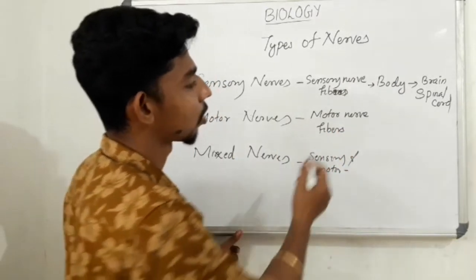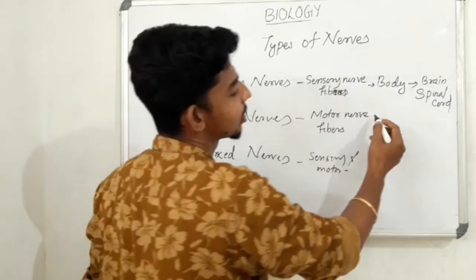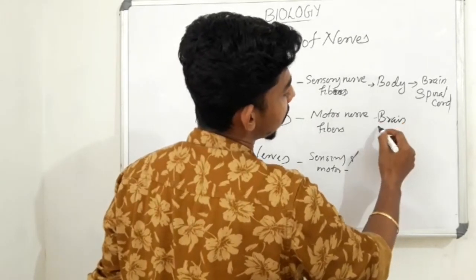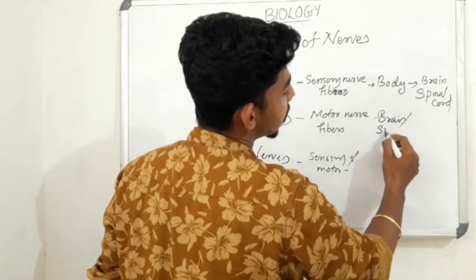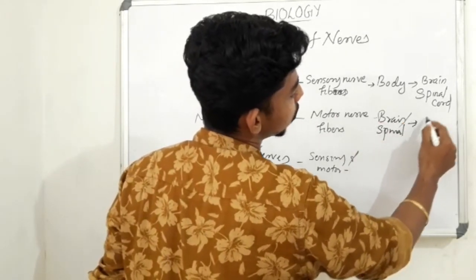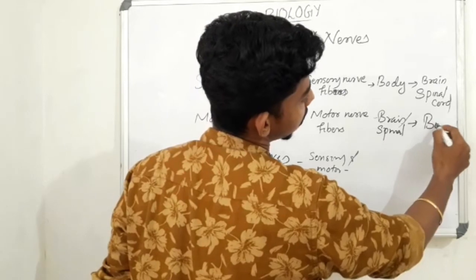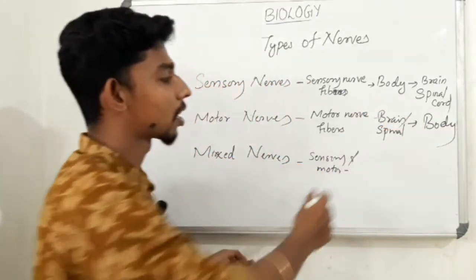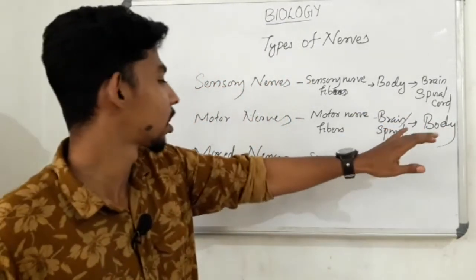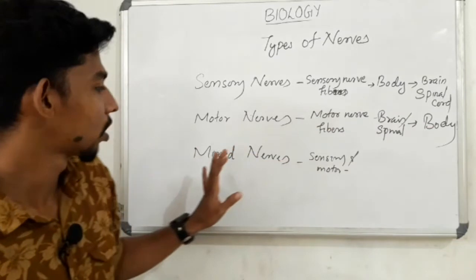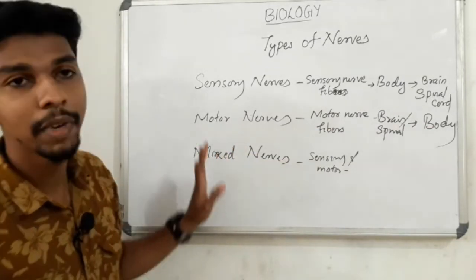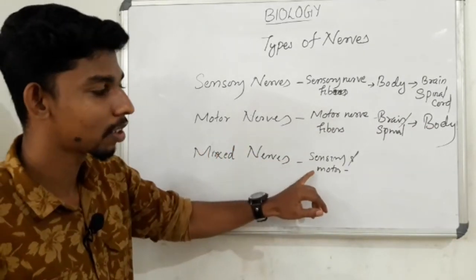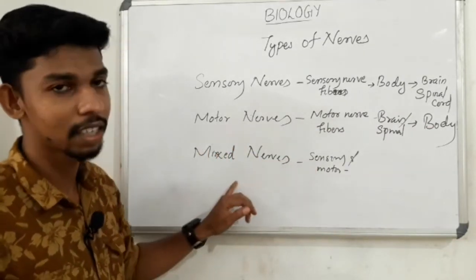Motor nerves carry impulses from the brain and spinal cord to the body. This is the motor nerve. Then, mixed nerves — if you have both sensory and motor fibers together, it will be a mixed nerve.